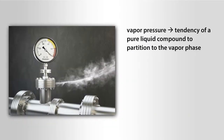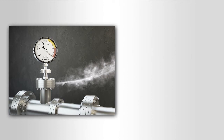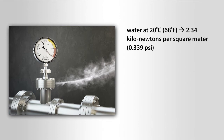Vapor pressure quantifies the tendency of a pure liquid compound to partition to the vapor phase. Liquid molecules that possess sufficient kinetic energy are projected out of the main body of a liquid at its free surface and pass into vapor. The pressure exerted by this vapor is known as the vapor pressure. The vapor pressure of water at 20 degrees Celsius or 68 degrees Fahrenheit is 2.34 kilonewtons per square meter or 0.339 PSI.